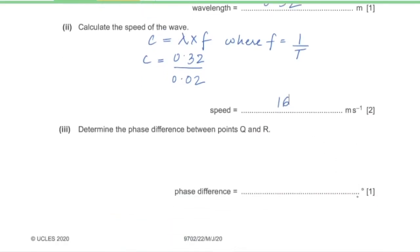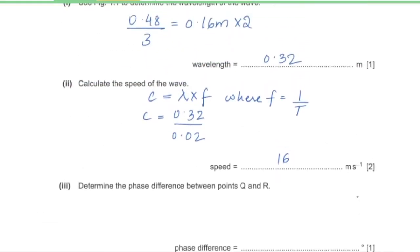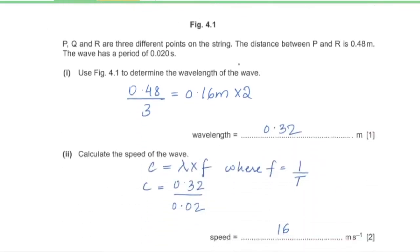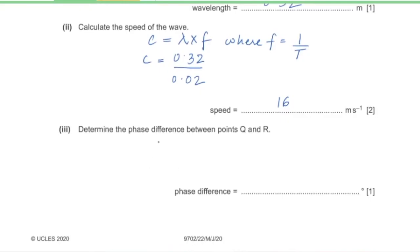Part 3: determine the phase difference between Q and R. Phase difference = (distance Q to R / wavelength) × 360°. Distance Q to R = 0.16 + 0.16 + 0.08 = 0.4 m. Phase difference = (0.4 / 0.32) × 360° = 450°.